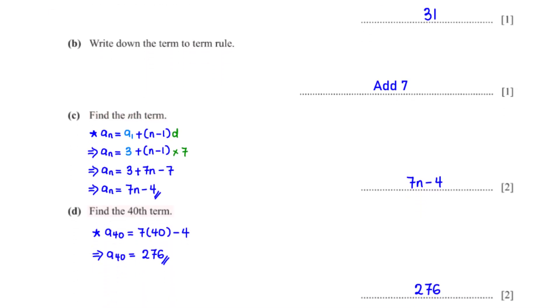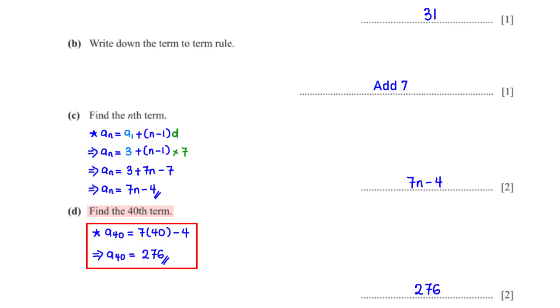Find the 40th term. To get the 40th term we plug in n equals 40 into 7n minus 4, which gives us 276.